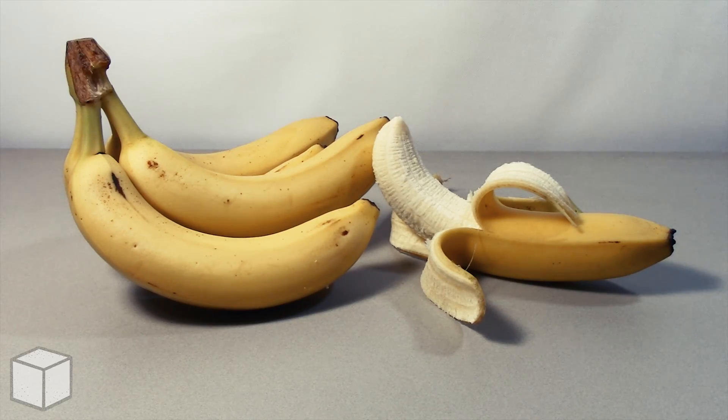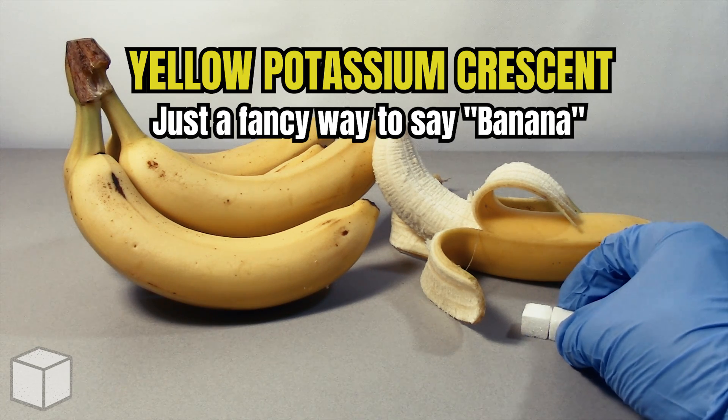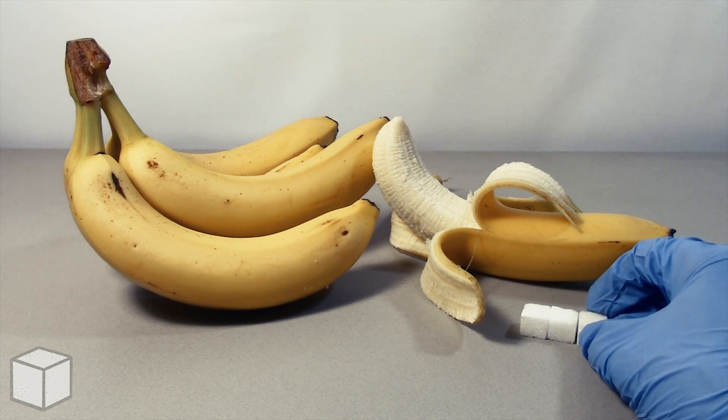In conclusion, this yellow potassium crescent is loaded with roughly 6 cubes of sugar.